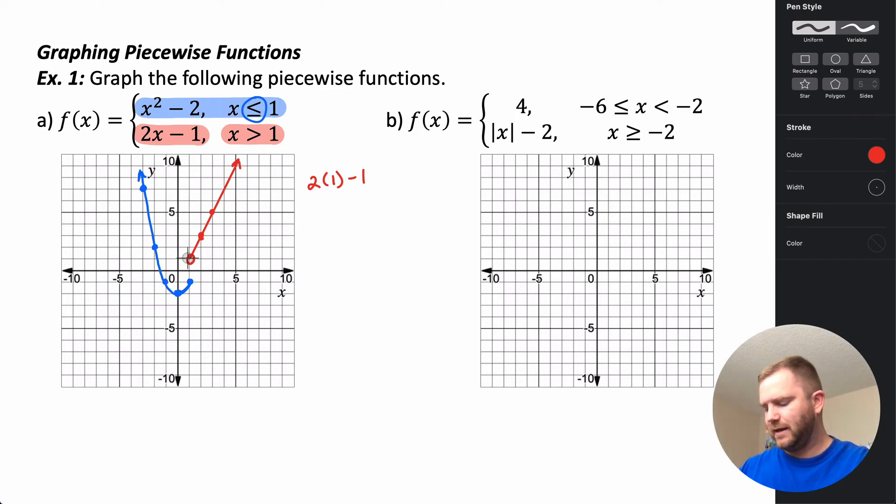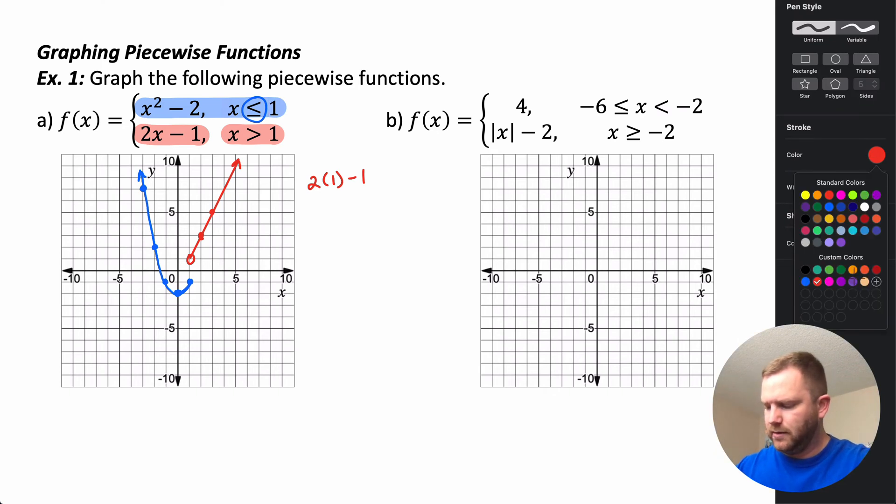So the line is the lower-right portion and the parabola is the upper-left portion of the graph.